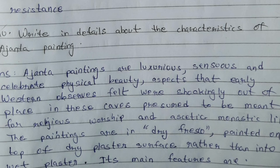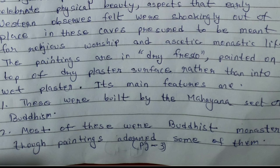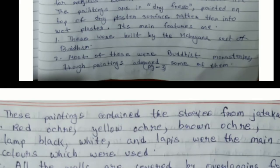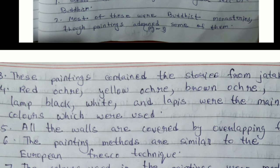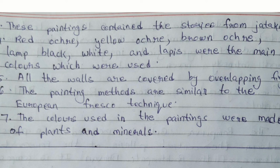Main features of Ajanta paintings: Point 1 — These were built by the Mahayana sect of Buddhism. Point 2 — Most of these were Buddhist monasteries, though paintings adorned some of them. Point 3 — These paintings contain stories from the Jatakas. Point 4 — Red ochre, yellow ochre, round ochre, lamp black, white, and lapis lazuli were the main colours used. Point 5 — All the walls are covered by overlapping figures. Point 6 — The painting methods are similar to the European fresco technique. The colours used in the paintings were made from plants and minerals.